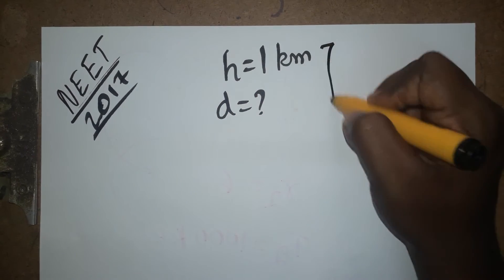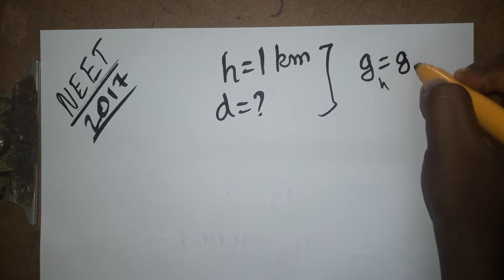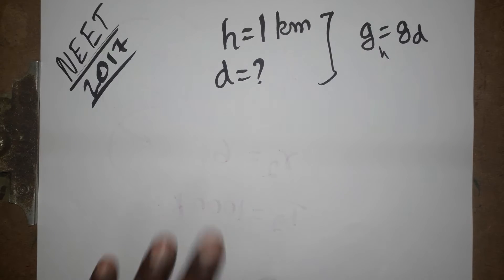The gravity should be equal. The gravitation has to be same - height and depth it has to be same. So it is a very simple question and a repeated question also.